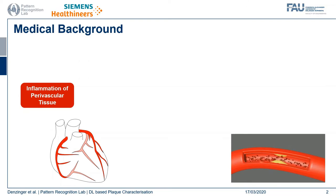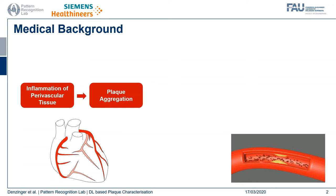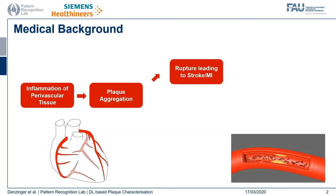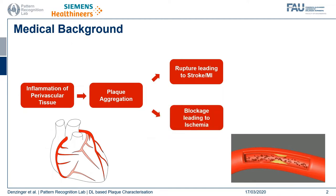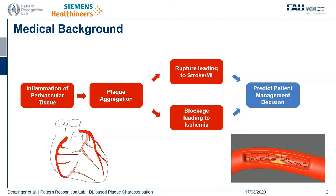Due to inflammation of the tissue surrounding the coronary vasculature, plaque deposits can aggregate within the vessel walls. These plaques can narrow the lumen, obstructing blood flow. This can lead to rupture of plaque segments, causing thrombus formation and events like stroke or myocardial infarction. Alternatively, the plaque can narrow the vessel such that the heart muscle is malperfused, and ischemia can lead to sudden cardiac death. In this work, we try to predict the patient management decision or revascularization decision on lesion level, while having the stenosis degree as a sub-target.